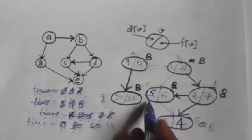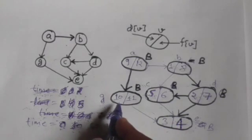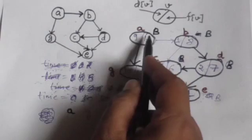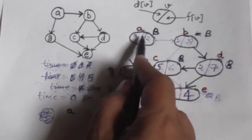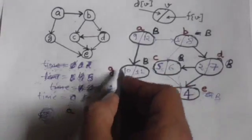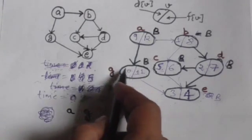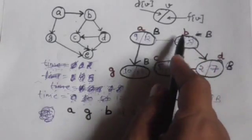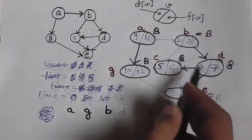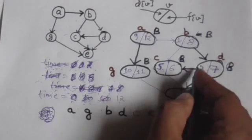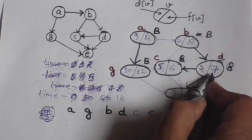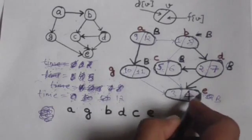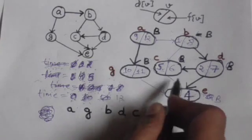We will arrange the vertices of this graph in decreasing order of their finishing time. First we write vertex A because its finishing time is maximum — 12. Then vertex G with finishing time 11, then vertex B with finishing time 8, then vertex D with finishing time 7, then vertex C with finishing time 6, and finally vertex E which has the smallest finishing time.